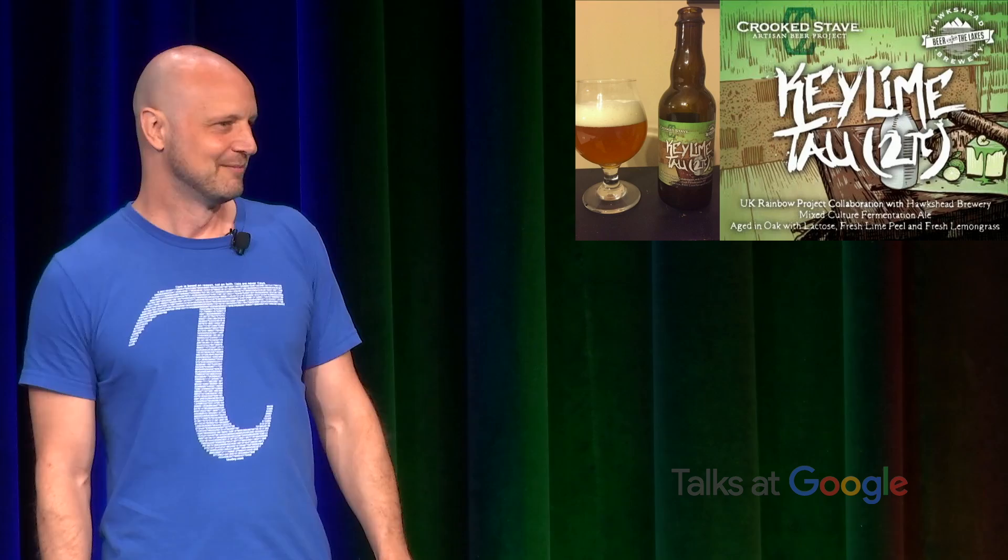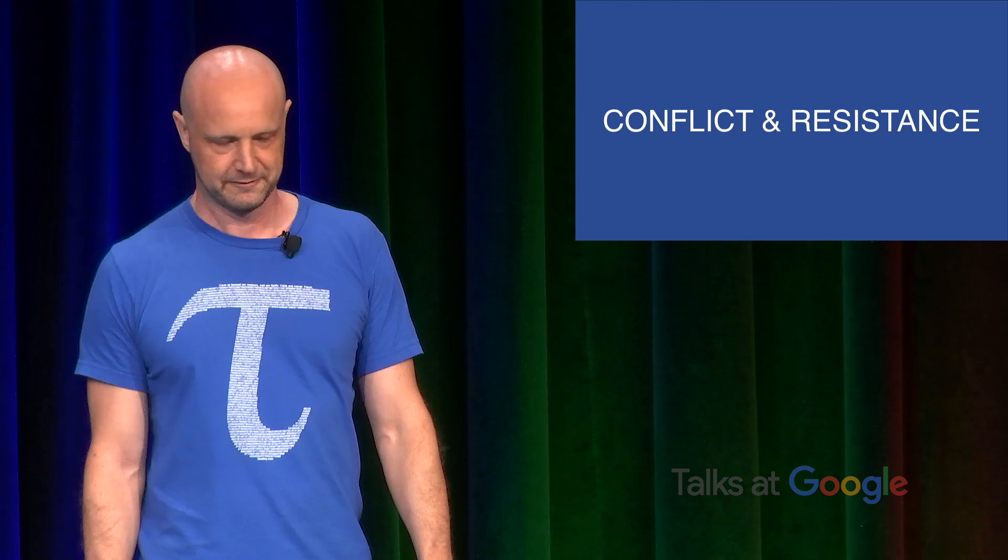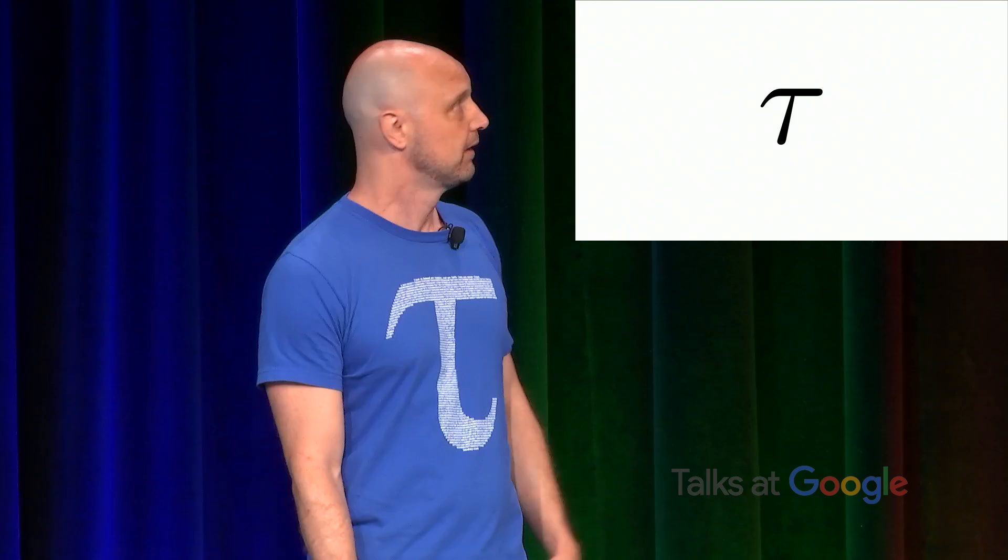But of course, you can't take on an icon like Pi without expecting some conflict and resistance. So there has been some pushback on the choice of notation. Let's start with that, the Greek letter Tau. And there are some legitimate concerns here, but I'd like to mention a couple of important figures who have emerged since the original Tau Manifesto got published.